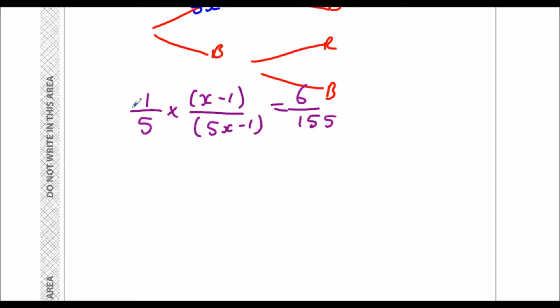Okay, multiplying the fraction, so we multiply the top, multiply the bottom. So that leaves me with x minus 1 over 25x minus 5 equals 6 over 155.